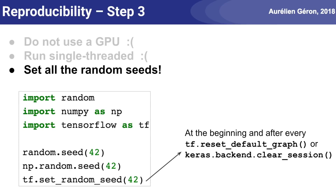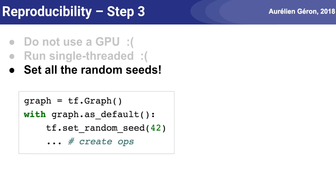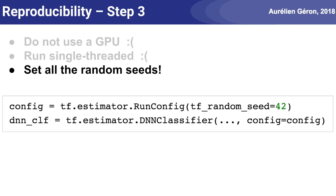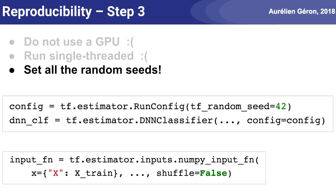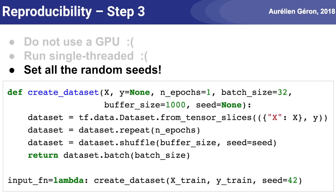This includes when you call Keras's clear_session function. Make sure you set the seed before you create the first random operation, not just before it's evaluated. If you create a graph, you need to set its own random seed as well. If you use the Estimators API, make sure to create a RunConfig with its tf_random_seed argument set, then pass it to the constructor when creating an estimator. If you use the NumPy input function, set its shuffle argument to False — unfortunately it does not let you set the seed and uses a random one, at least up to TensorFlow version 1.10. In that case, you probably want to shuffle the dataset yourself before training. However, shuffling will only happen once, not before each epoch, so it's not ideal. A better option is to create your own input function using the Data API and set the random seed when calling the shuffle function.